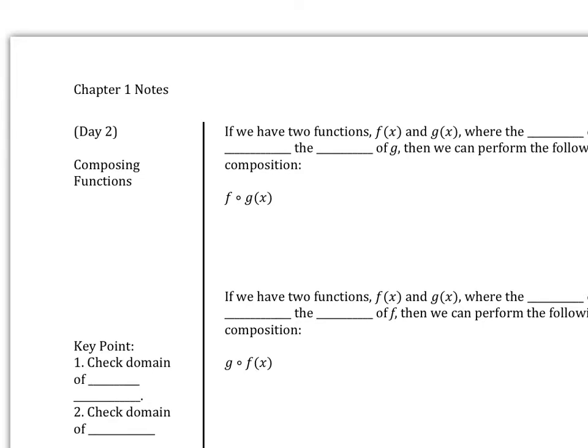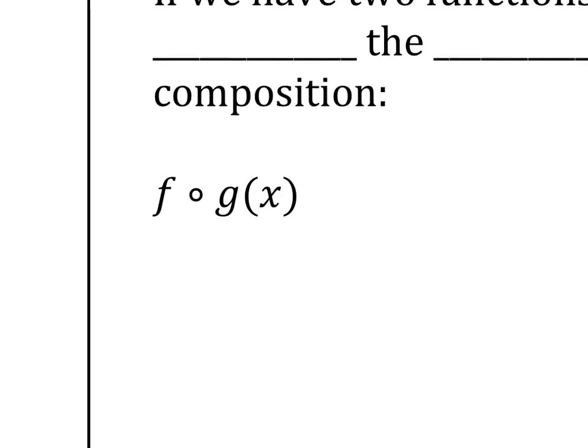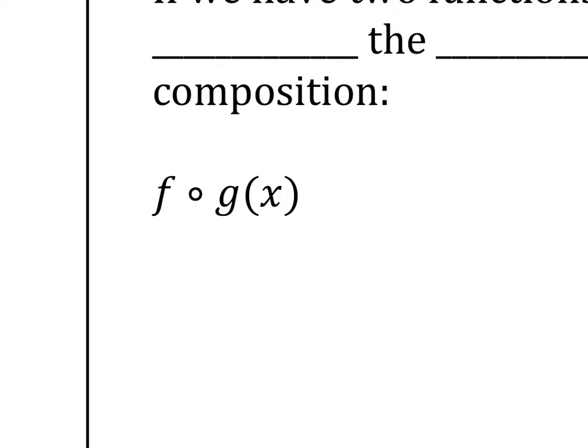Yesterday we talked about the story of the picky eater — two functions going to an after-school snack, trying to figure out who is the picky eater, and then you go with that domain. Today I don't have a story, but it's a little bit different. You're going to see two functions together like this notation: f circle g of x.